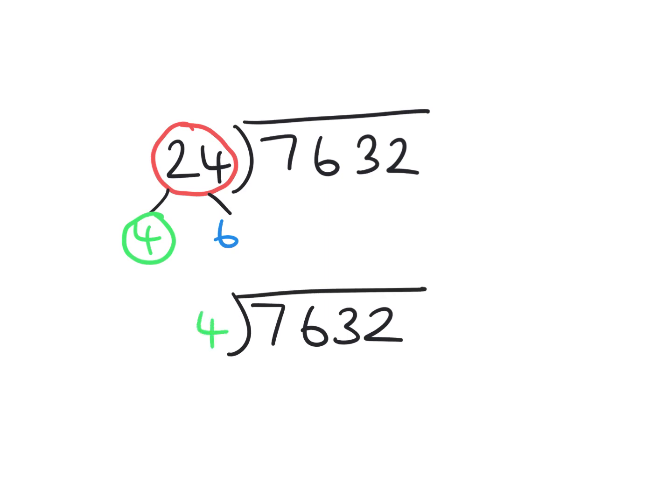Using the standard short bus stop method, 4s into 7 goes once and carry the leftover 3 over. 4s into 36 go 9, nothing to carry. 4s into 3 won't go, so carry the unused 3 over. 4s into 32 go 8, giving us 1908.